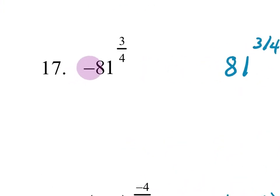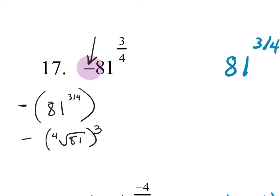A student asks about the negative sign. The negative is not in the parentheses, which means it's the last thing that gets applied. So if you want, rewrite it so the negative is bumped to the front, reminding yourself that's what you need to do. Then that becomes negative times the 4th root of 81 raised to the 3rd power — and you can 4th root a positive 81. A student asks: if the negative were inside the parentheses, would it be no solution? Yes — if the negative were inside with an even root, no solution.